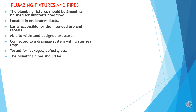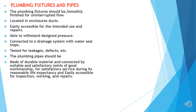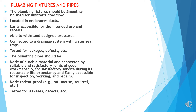The plumbing side pipe should be made of durable material and connected by suitable joints of good workmanship, for satisfactory services during its reasonable life expectancy, and easily accessible for inspection, working and repairs. Made rodent-proof — that is, rat, mouse, squirrel, etc. Tested for leakages, defects, etc.